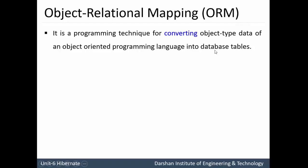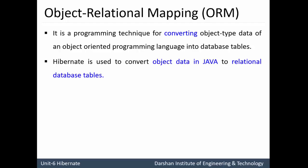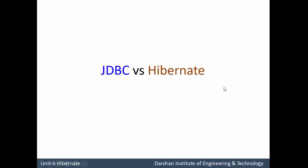So here it is converting the objects defined in our programming language into relational database rows. A record which is stored in a Java program in the form of an object is stored into the database in the form of a particular row. Hibernate is used to convert object data in Java to a relational database.